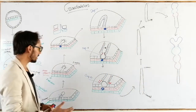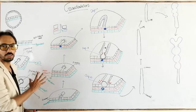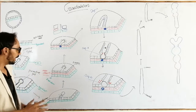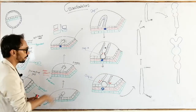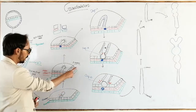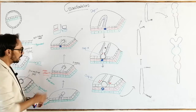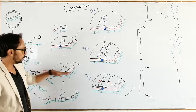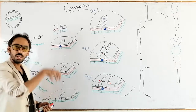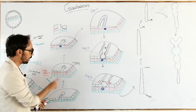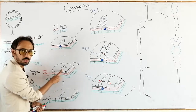In our last lecture we discussed gastrulation — the formation of the ectoderm, endoderm, and mesoderm — where the ectodermal cells were going deeper inside through the primitive groove.